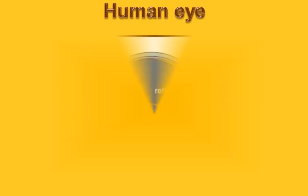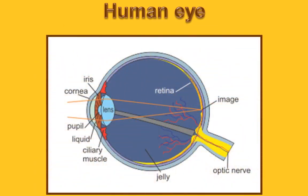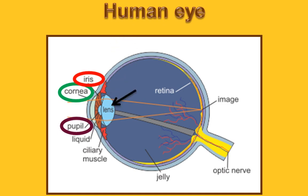The human eye is like a camera. Light enters the eye through a transparent membrane called cornea. Behind the cornea is a muscular diaphragm called iris, which has an opening called pupil. The pupil controls the amount of light entering the eye.